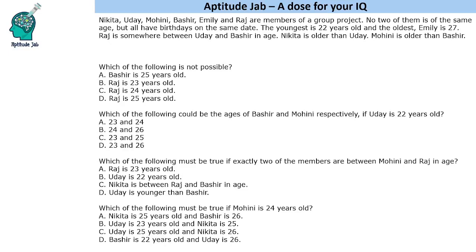Welcome to Aptitude Jab. This is a set based on ordering of people based on their ages. There are six members of a group project and no two of them are of the same age. The youngest is 22 and the oldest is 27 years of age. Emily is 27, Raj is somewhere between Udaya and Bashir in age, Nikita is older than Udaya, and Mohini is older than Bashir. These are the conditions given and we have to answer the questions based on these.